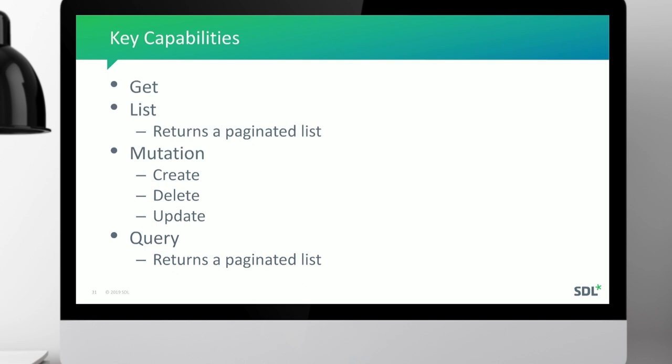The key capabilities include getting an entity, listing entities with paginated results — so if you search for 10,000 items it makes sense to return them in chunks of 50 — support for mutations so you can create, delete, or update entities, and support for querying, which is basically searching for a particular entity.